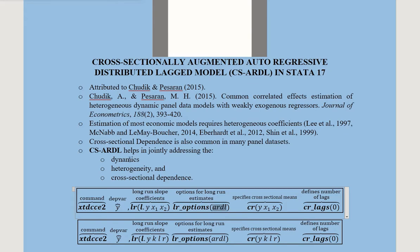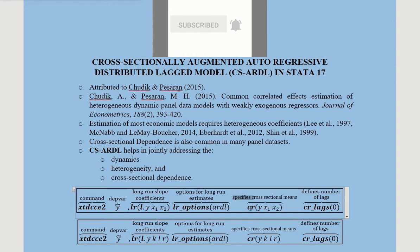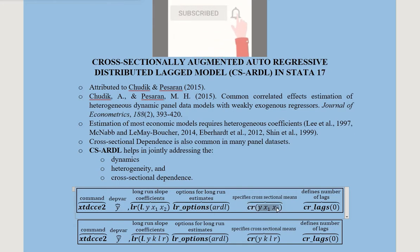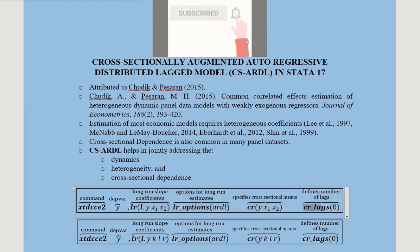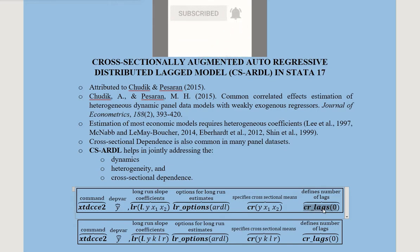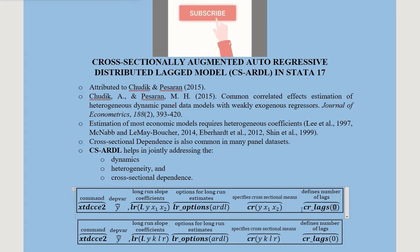We choose ARDL here because we want to estimate CS-ARDL. We also specify the cross-sectional averages or means for all variables — that is, CS means for the dependent variable Y, X1, and X2. All of these options have quite a bit of detail, for which you can refer to the authors' work. This is a simplified version of the command. Finally, we have the cross-sectional lags; here we choose 0, meaning no lag and no lead.